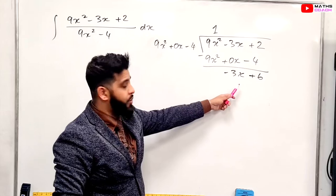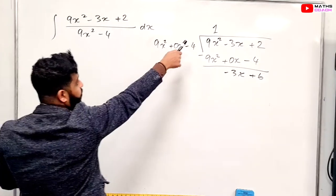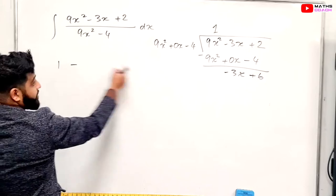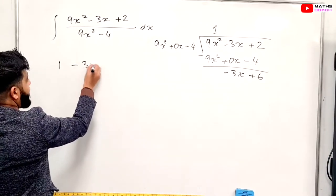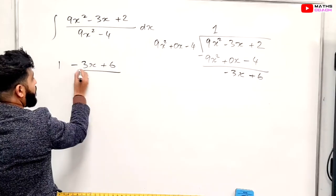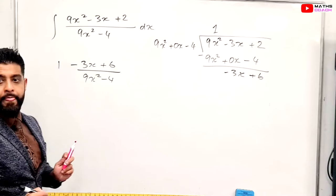Now we won't go any further because this power is bigger now. So therefore, what do we have? We have 1 minus 3x plus 6, so the minus 3x plus 6 all over 9x squared minus 4.